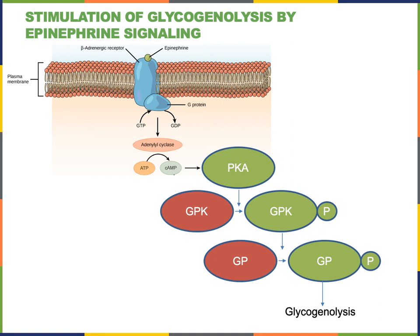Then cyclic AMP will activate a phosphorylation cascade. A phosphorylation cascade is a sequence of multiple protein kinases that phosphorylate other proteins to regulate a cellular response. A kinase is an enzyme that performs phosphorylation, adding a phosphate group to a molecule. In contrast, a phosphatase is an enzyme that removes the phosphate group from a molecule. In this phosphorylation cascade, phosphorylation will activate the target protein that becomes phosphorylated, although in some cases phosphorylation can inactivate or turn off a protein.